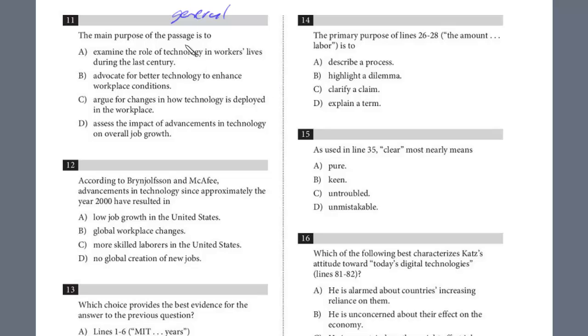So, we already know, we've predicted this, that it's really an analytical passage. And it attempts to explain this disparity between the increase in productivity and there wasn't a concurrent increase in employment. Does it examine the role of technology in workers' lives during the last century? This doesn't examine the role. That's part of the reason behind this gap, but that's not what the whole passage is about. Does it advocate or argue for better technology to enhance workplace conditions? Totally off point. Does it argue for changes in how technology is deployed? No. Does it assess the impact of advancements in technology on overall job growth? This is exactly what it does. See how they use this broad, general language? They don't say that it was responsible for a decline in jobs. Assess the impact of advancement on job growth. Nothing descriptive there, but that is the right choice. It's broad and general, D.